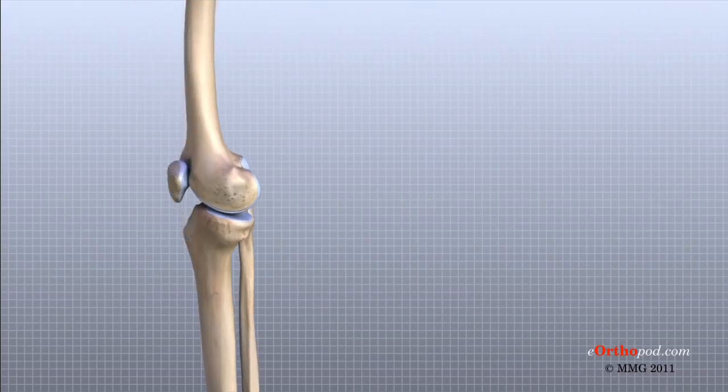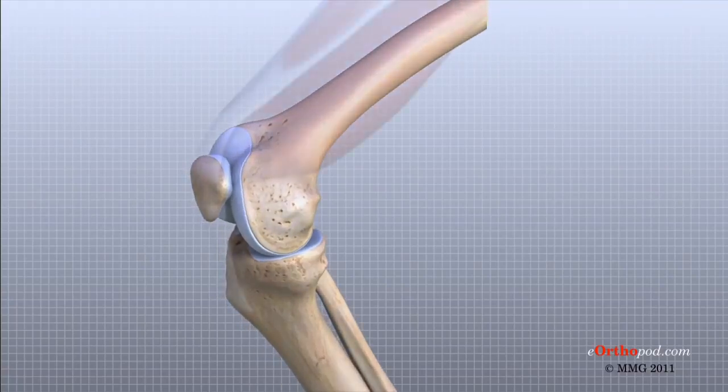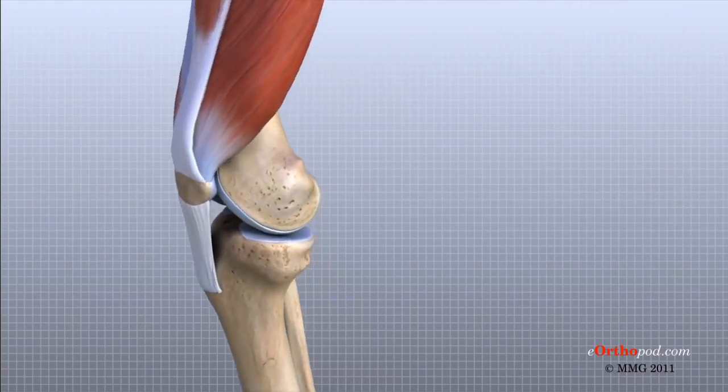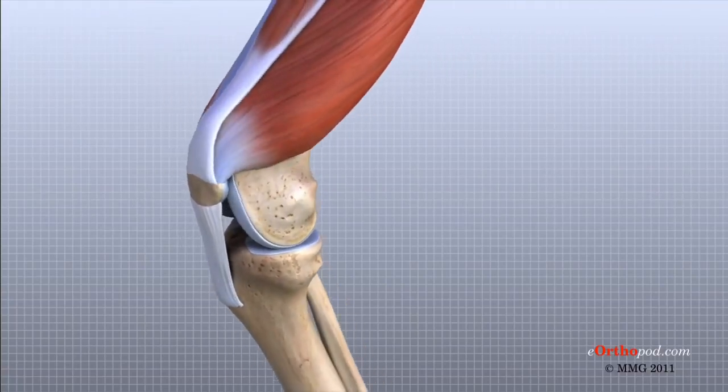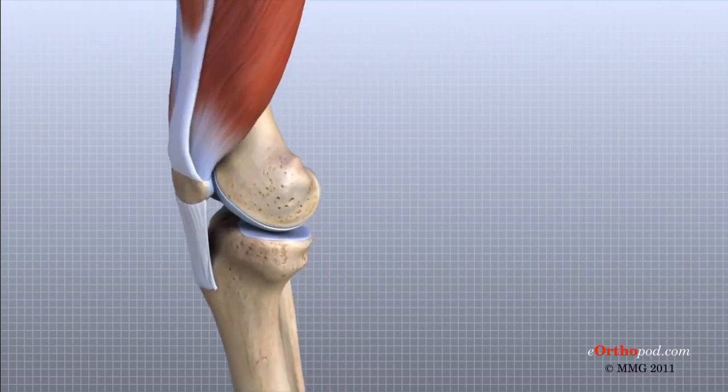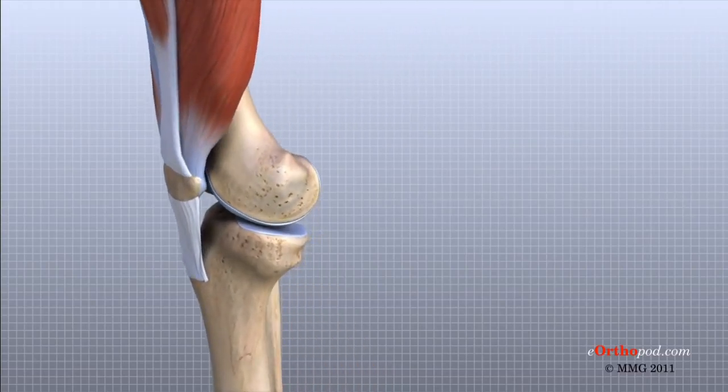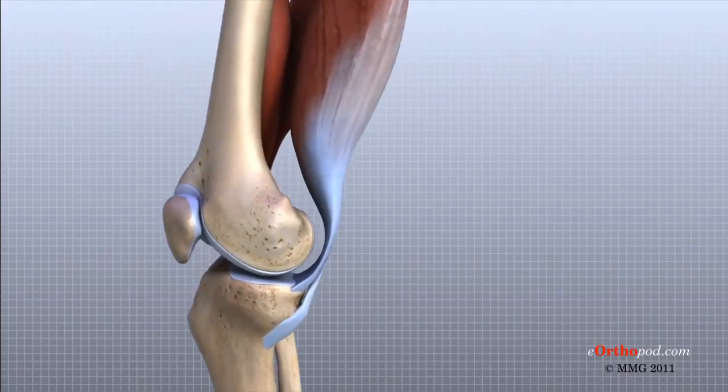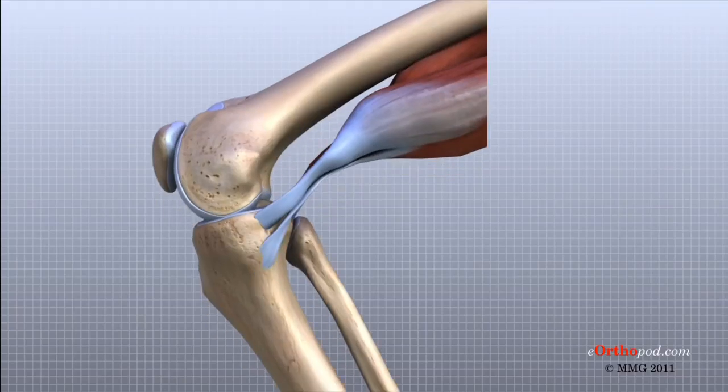The way in which the kneecap fits into the patellofemoral groove on the front of the femur and slides as the knee bends can affect the overall function of the knee. The patella works like a fulcrum, increasing the force exerted by the quadriceps muscles as the knee straightens. The hamstring muscles are the large muscles in the back of the thigh. When these muscles contract, the knee bends.